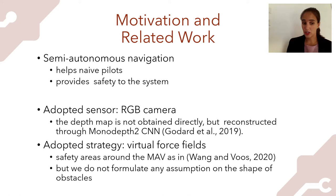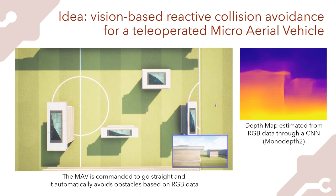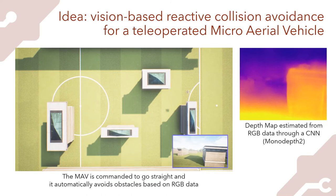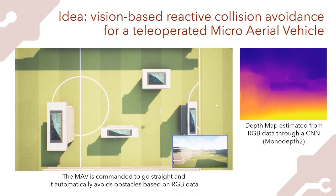Here you see our algorithm tested in a simulated environment. The robot is commanded to go straight, then as soon as it detects obstacles it avoids them. When no obstacle is detected the robot continues to go straight. In the other video you can see the depth map estimated from RGB data through the convolutional neural network.